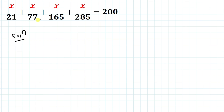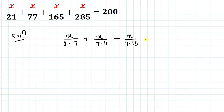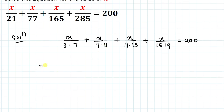In the first step I will factorize all the denominators present on the left hand side of the equation. So x/21 can be written as 3×7, plus x/77 as 7×11, plus x/165 as 11×15, plus x/285 as 15×19, equals 200.